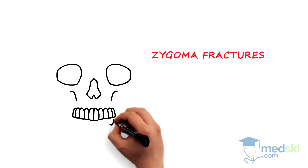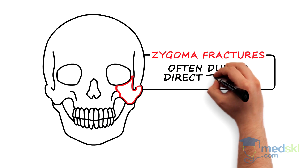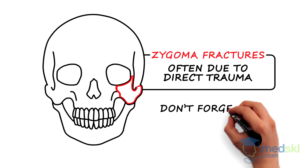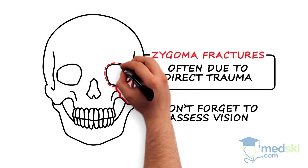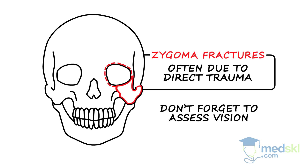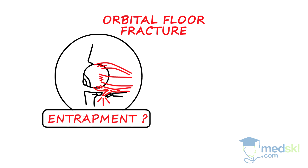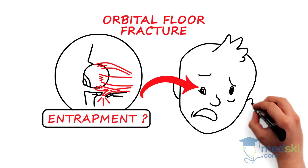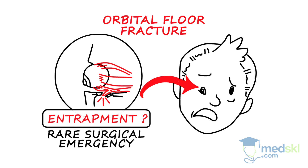Zygoma fractures are the second most common facial fracture, and are often due to direct trauma. Don't forget to assess vision, as most of these patients will also have concurrent ocular injuries. If the patient has an orbital floor fracture, make sure there is no entrapment of the inferior rectus muscle. Entrapment is a clinical diagnosis — the patient is unable to elevate the eye. This is a rare surgical emergency, most commonly seen in the pediatric population.